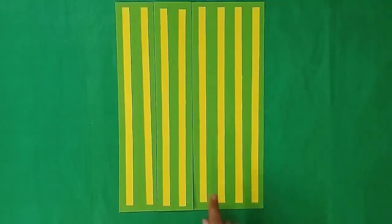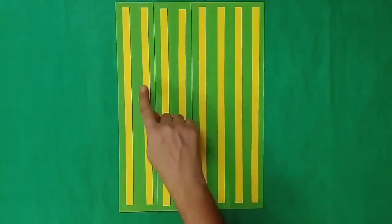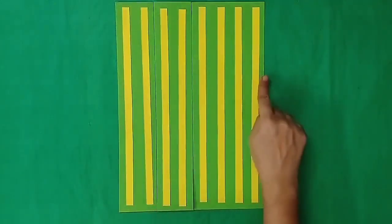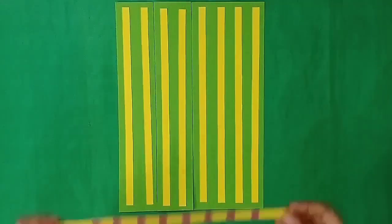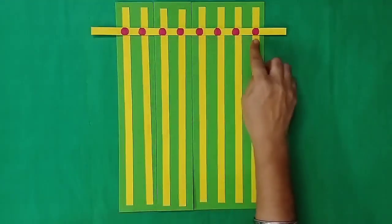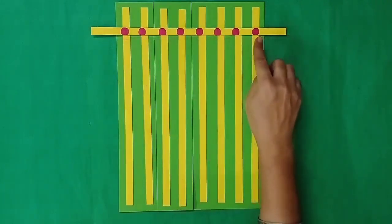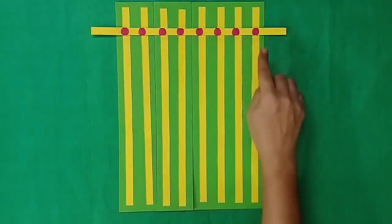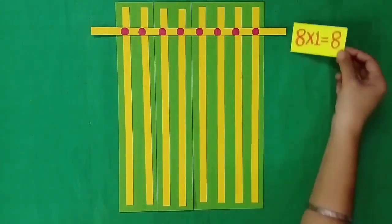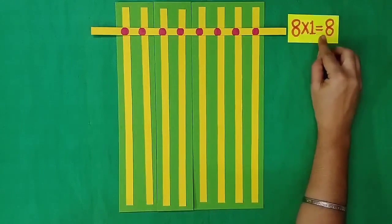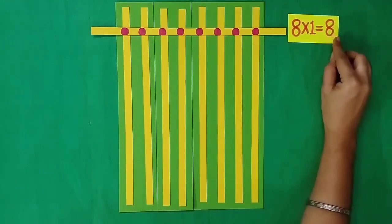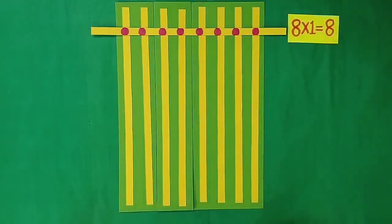Yesterday when I placed 1 horizontal paper strip on these vertical strips, we got 8 intersecting points on it. It means 8 multiplied by 1 is equal to 8.